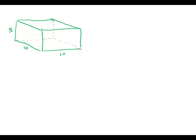A rectangular box is 10 inches wide, 10 inches long, and 5 inches high. What is the greatest possible straight line distance in inches between any two points on the box?